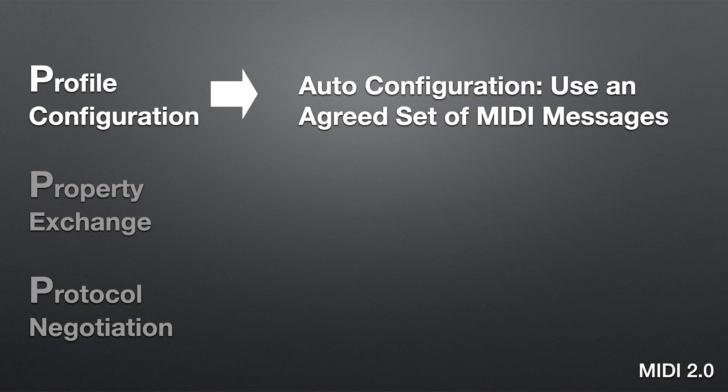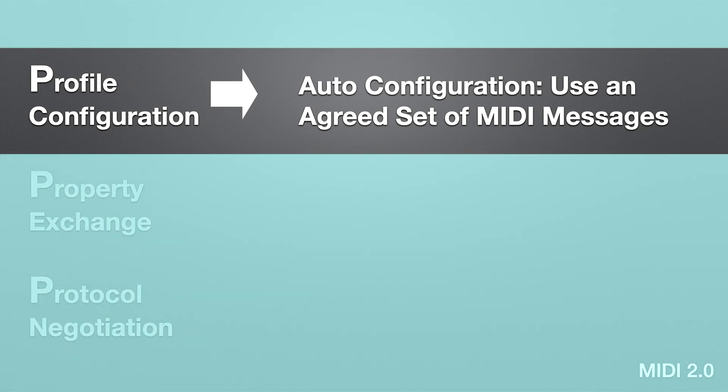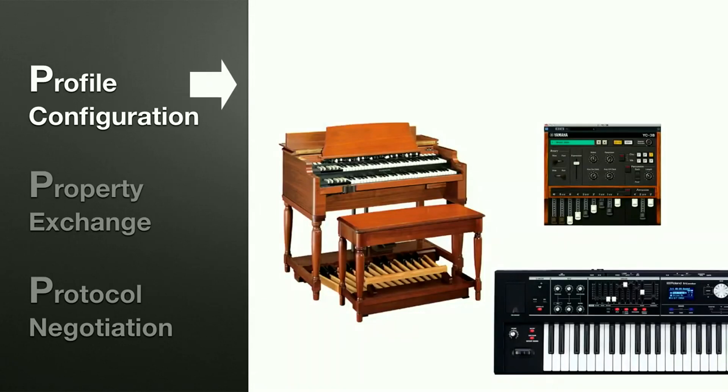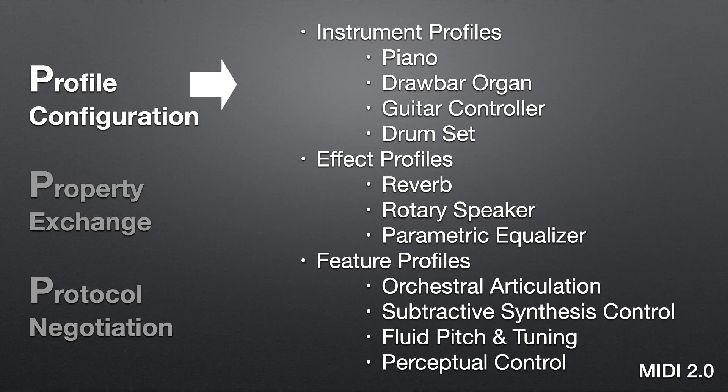Profiles, as explained by Mike Kent, take advantage of two-way communications to standardize messages among devices of a similar type — part of automatic, hassle-free configuration. Profile is auto-configuration: two devices agree to use a predetermined set of messages. Consider a drawbar organ — many Hammond organs have nine drawbars, and three different drawbar organs potentially use different messages to control those nine drawbars. By introducing a profile, a device can ask another device what profiles it understands. That device replies 'I understand the organ profile,' and then each device switches to using that profile, so drawbar number 16 uses a common message across all three devices from all manufacturers.